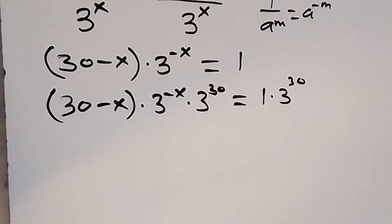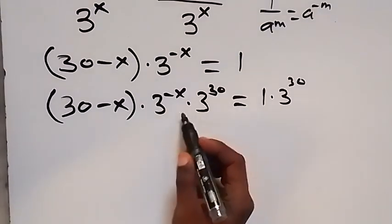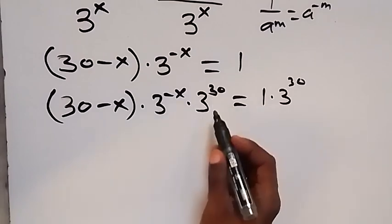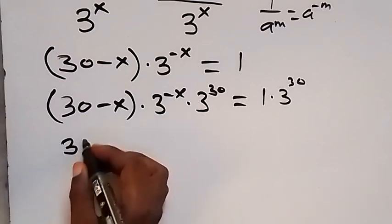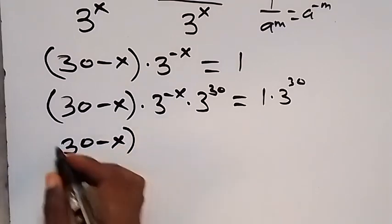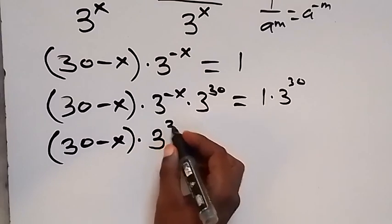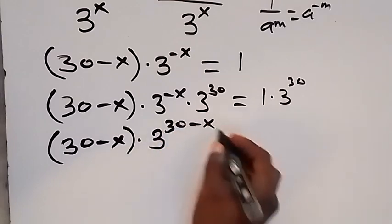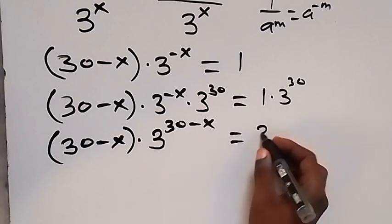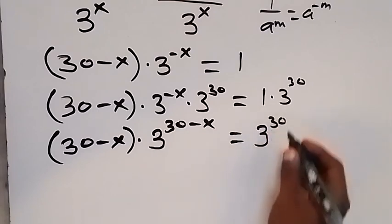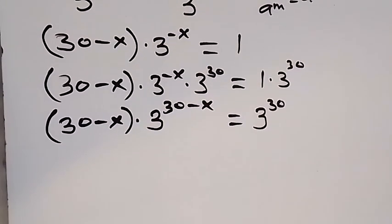From the law of indices, when multiplying with the same base we add the powers. So this becomes 30 minus x, multiplied by 3 raised to the power 30 minus x, and that equals 3 raised to power 30.